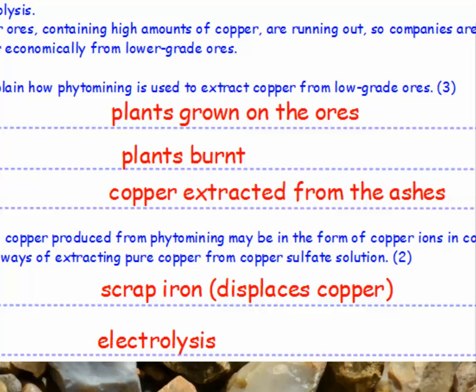How is phytomining used to extract copper from low grade ores? Firstly, plants are grown on the ores. Secondly, the plants are burnt. And thirdly, the copper is extracted from the ashes. For Part B — extracting copper from copper sulphate solution — you can either put in scrap iron, which displaces the copper, or you can separate it using electrolysis.